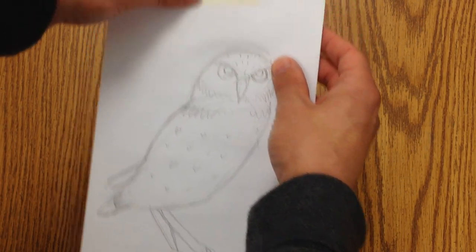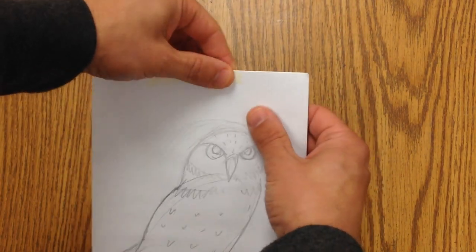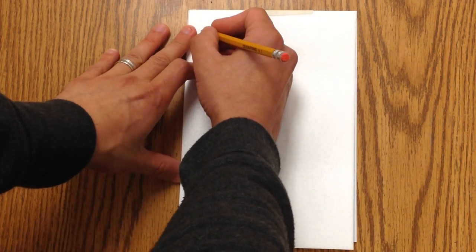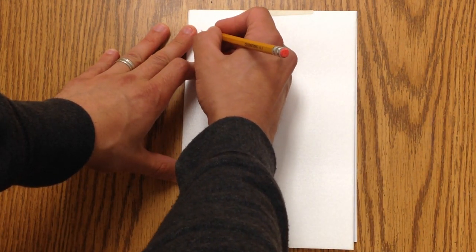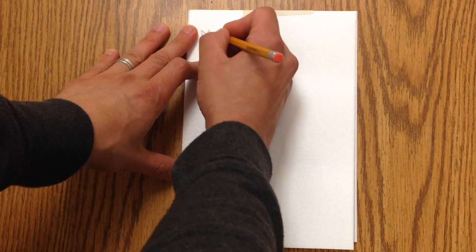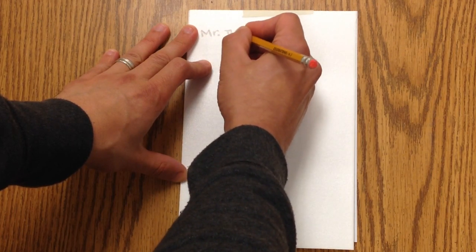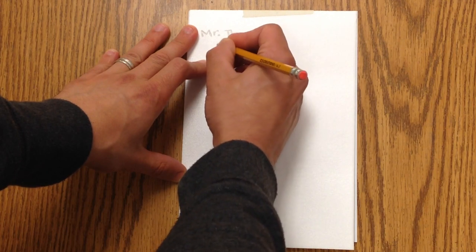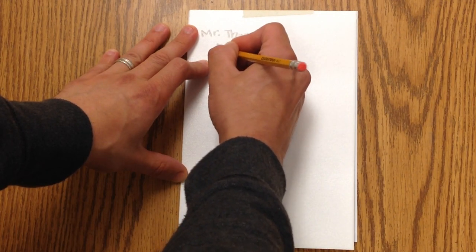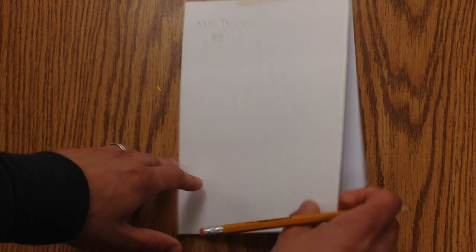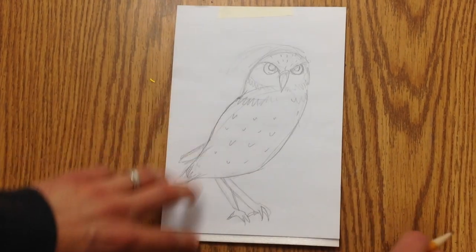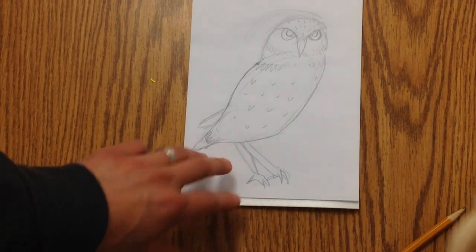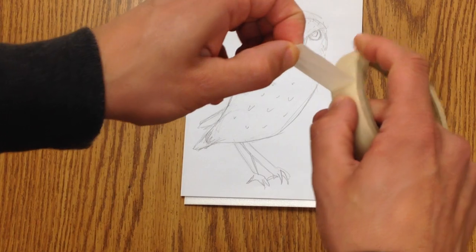I'm just going to simply fold this over to the back. Very lightly with the pencil, I'm going to write my name and my class code. Then I might even take an extra piece of tape and put that down here on the bottom so it doesn't slide around.